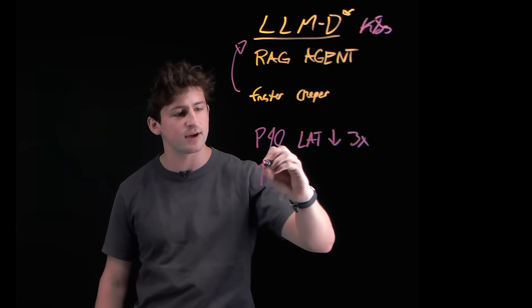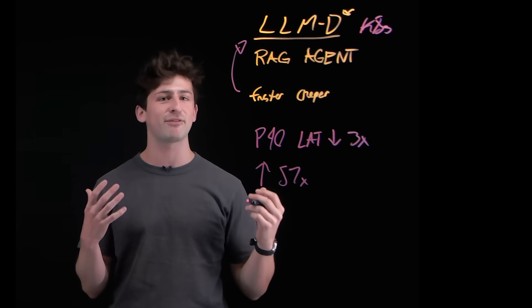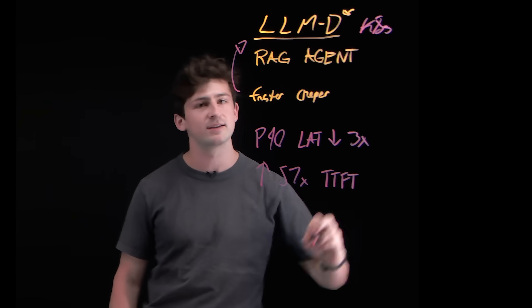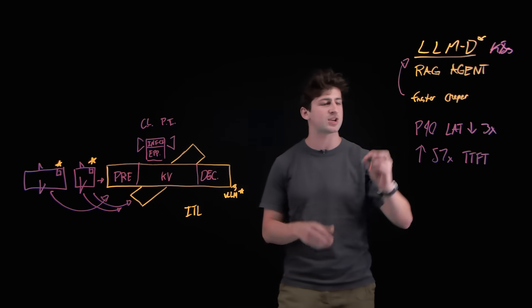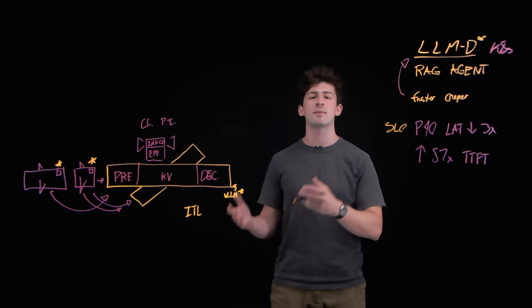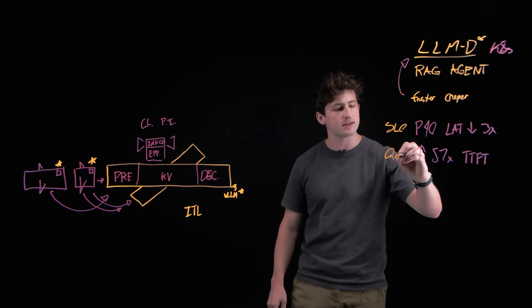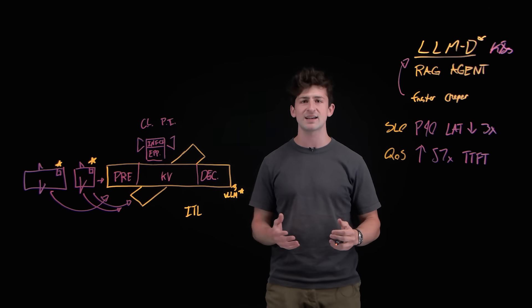At the same time, there was also an increase by 57 times in the first token response time. So, time to first token, right? So, these are all really important for several conditions, such as service-level objectives, which are performance or latency targets that need to be met, or also quality of service agreements that a lot of hyperscalers and large organizations need.